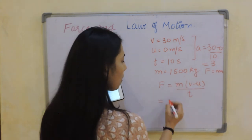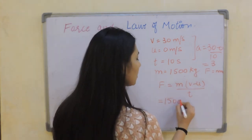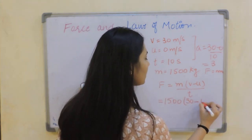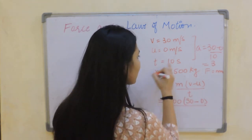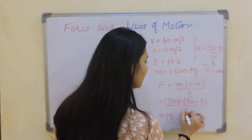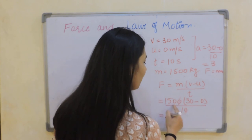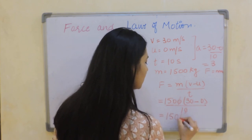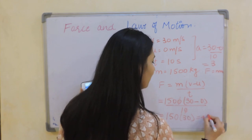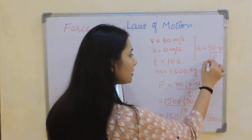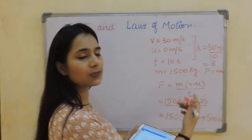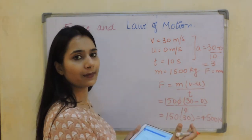Let's solve it using the momentum formula: F equals m(v minus u)/t. Putting values: 1500 times (30 minus 0) divided by 10. Cancelling: 150 times 30 gives 4500 Newton. The answer is the same in both cases — both formulas are equivalent; it's just how you deal with it.